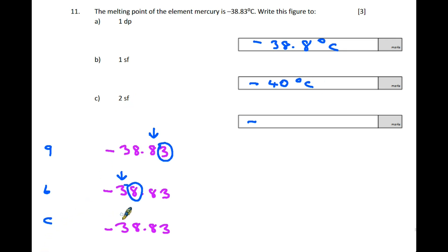Part C, two significant figures: one significant figure is three, two is eight. We're rounding the eight, which is five or above, so it rounds up to -39 degrees Celsius.